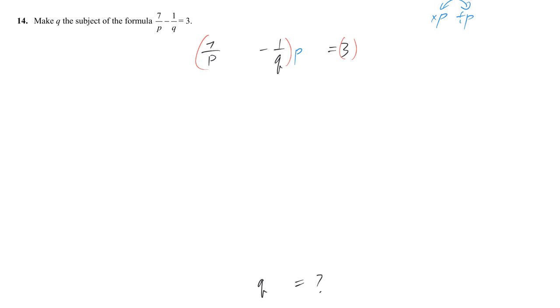So, now I'm going to times P on both sides. Similar reason, I don't want divided by Q. So, that's why I'm trying to do the opposite, which is times Q on both sides.